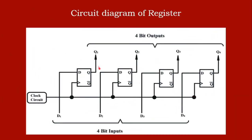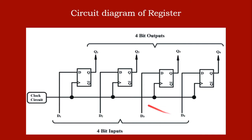Here we have the circuit diagram of a four-bit shift register. Shift registers always work under clock control. The D flip-flop is the flip-flop that helps to do the data transfer — transfer is nothing but shifting the data. Four D flip-flops are arranged because we have four bits of data. Q is the output and Q-bar is the complemented output. The inputs are D1, D2, D3, and D4, and the outputs are Q1, Q2, Q3, and Q4. The clock circuit connects all the flip-flops serially, represented by the triangle symbol.